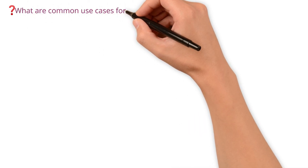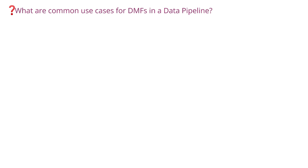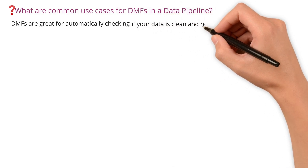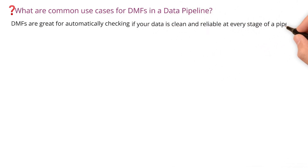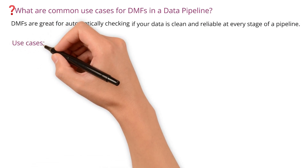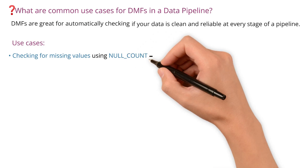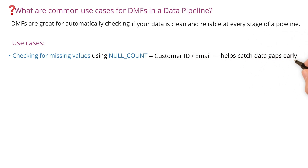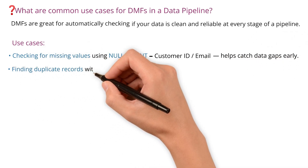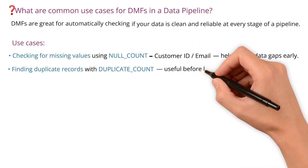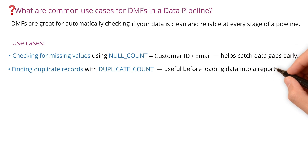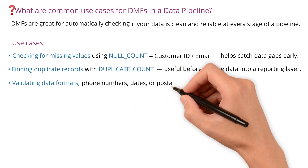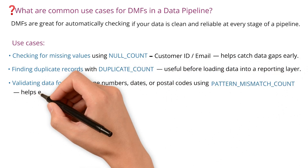What are common use cases for DMFs in a data pipeline? DMFs are great for automatically checking if your data is clean and reliable at every stage of a pipeline. Common use cases include checking for missing values using Null Count — especially in key fields like customer ID or email — to catch data gaps early. Finding duplicate records with Duplicate Count is useful before loading data into the reporting layer. Validating data formats like phone numbers, dates, or postal codes using Pattern Mismatch Count helps ensure data is usable.